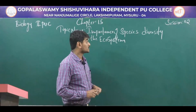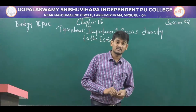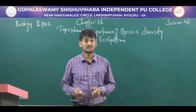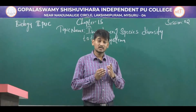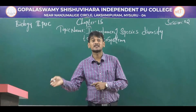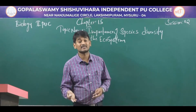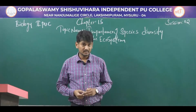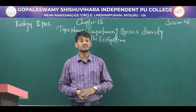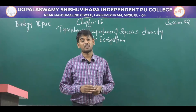The first topic is importance of species diversity to the ecosystem. As we know, species richness is very important for ecosystems. Communities with more species generally tend to be more stable than those with fewer species. A stable community should not show variation in productivity from year to year, and it must be either resistant or resilient to occasional disturbances, whether natural or man-made, and also resistant to invasions by alien species.